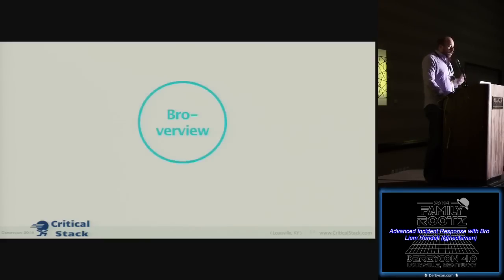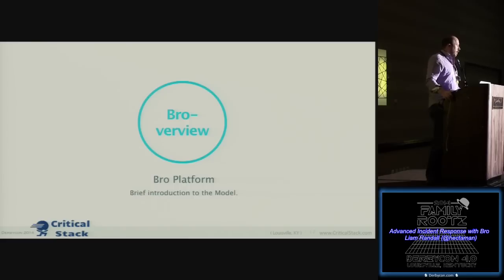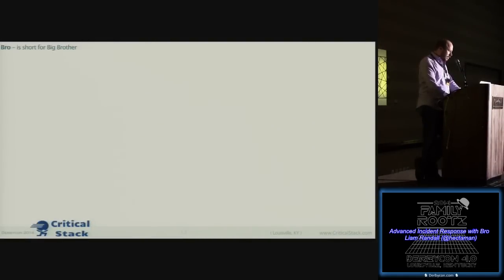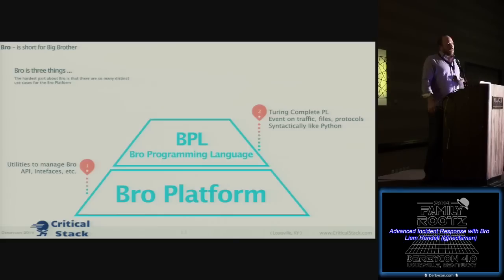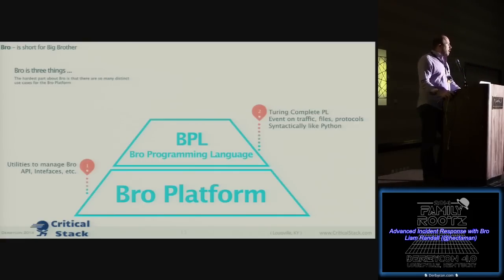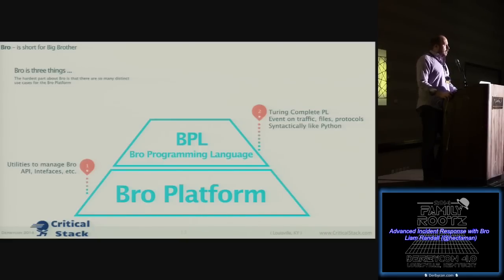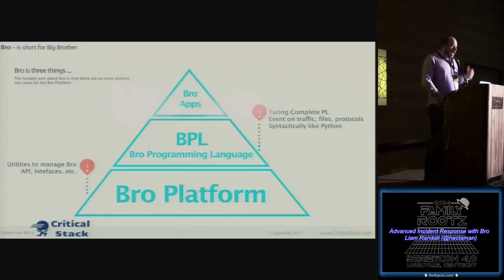My tool of choice for working through these things has been Bro for a long time, and it immediately resonated with me. We talk about Bro being three things. You have this platform installed on commodity x86 servers — Dell boxes, SuperMicro — and you map network traffic in megabits per second to CPU cores. On top of this platform there is a Turing-complete programming language called the Bro programming language, funded by the National Science Foundation and developed at the National Center for Supercomputing Applications in Urbana-Champaign, Illinois, and at the International Computer Science Institute in Berkeley, California.